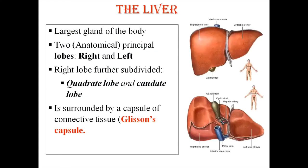Regarding gross anatomy, which we have already covered, the liver is the largest gland in the body. It has both exocrine and a small endocrine part, and two principal lobes anatomically — right and left lobe. The liver is covered by a capsule called Glisson's capsule, which is connective tissue with collagen fibers and cells. If you want to revise, please go through the earlier gross anatomy video.